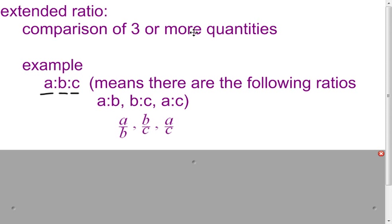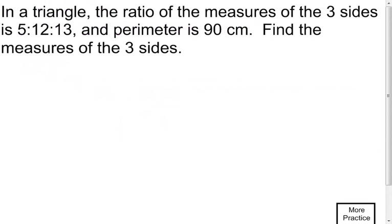Now how we can actually use the extended ratio is going to show up in this problem. I have a triangle with three sides in the ratio 5:12:13, and the perimeter is 90 centimeters. What I want to know is, how long are those three sides? Obviously, if the three sides were just 5, 12, and 13, adding those three numbers together doesn't come up to 90.